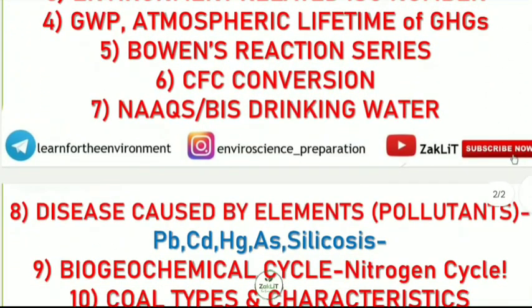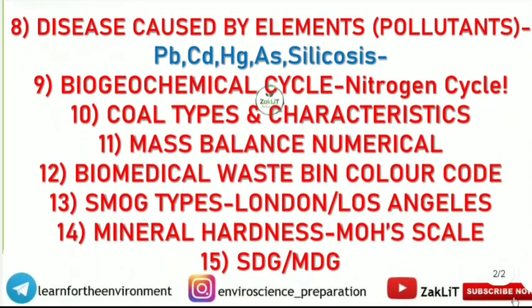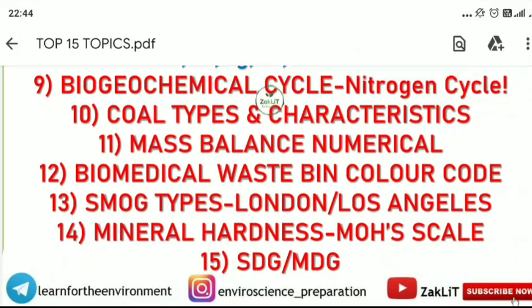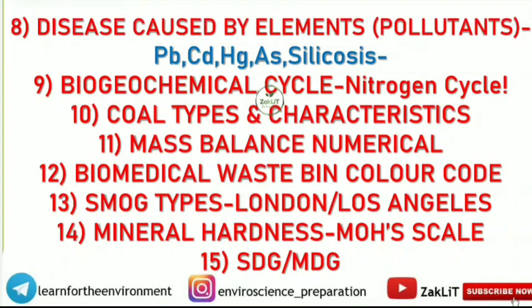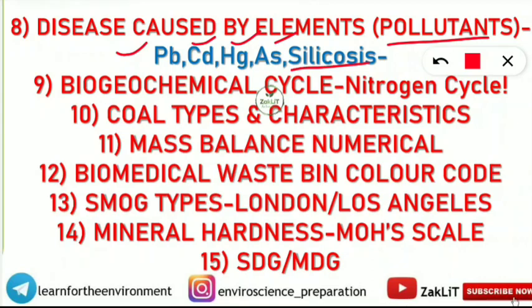We have now discussed 7 topics; here are the remaining 8 of the 15 most important topics. The eighth topic is diseases caused by elements or pollutants — in air, water, or soil. For example: lead, cadmium, mercury, arsenic, and silicosis. Questions frequently ask about Minamata disease caused by mercury pollution, and itai-itai disease. These are very frequently asked.